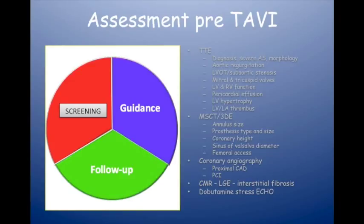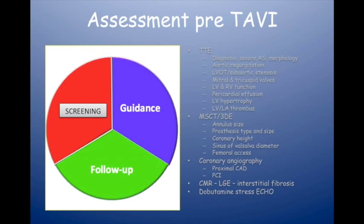What do we look for in the work-up on the transthoracic study? First, we want to make sure patients have severe aortic stenosis. We want to look at the morphology of the valve — is it bicuspid? Bicuspid valve aortic stenosis used to be a relative contraindication to TAVI, but it no longer is. However, the results with TAVI for bicuspid valves are not as good as for tricuspid valves — there's a much higher incidence of paravalvular leak.